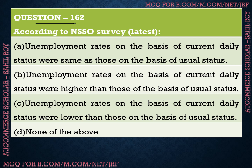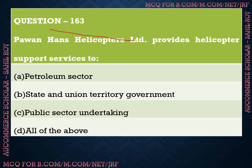Question number 162: According to the NSSO survey, which statement is correct? Option A: unemployment rates on the basis of current daily status were same as those on the basis of usual status. Option B: unemployment rates on the basis of current daily status were higher than those on the basis of usual status. Option C: unemployment rates on the basis of current daily status were lower than those on the basis of usual status. The correct answer is Option B — according to the NSSO survey, the unemployment rate on the basis of current daily status is higher than that on the basis of usual status.